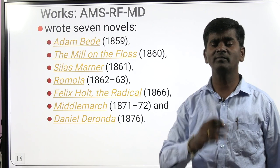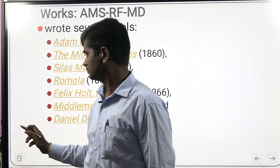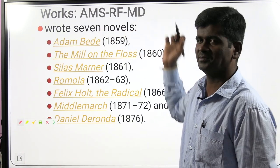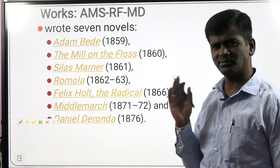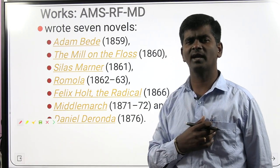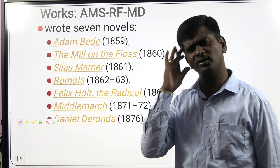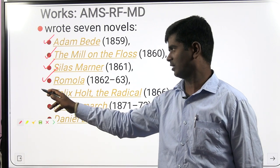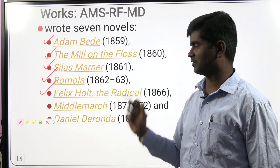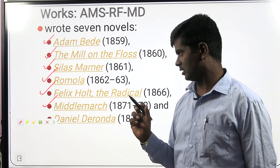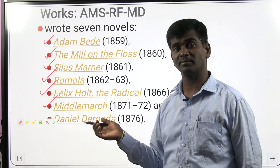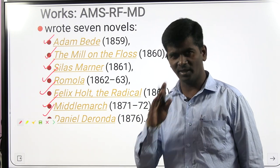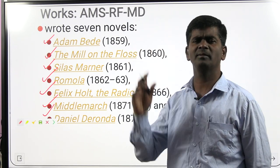Popular novels by George Eliot — remember the mnemonic: 'AMS RFMD.' Adam Bede (first novel), The Mill on the Floss, Silas Marner, Romola (historical novel), Felix Holt (also called 'The Radical' — subtitle asked in exams), Middlemarch (subtitle: 'A Study of Provincial Life'), and Daniel Deronda. Remember: AMS RFMD — you will be able to answer any question on George Eliot's novels.